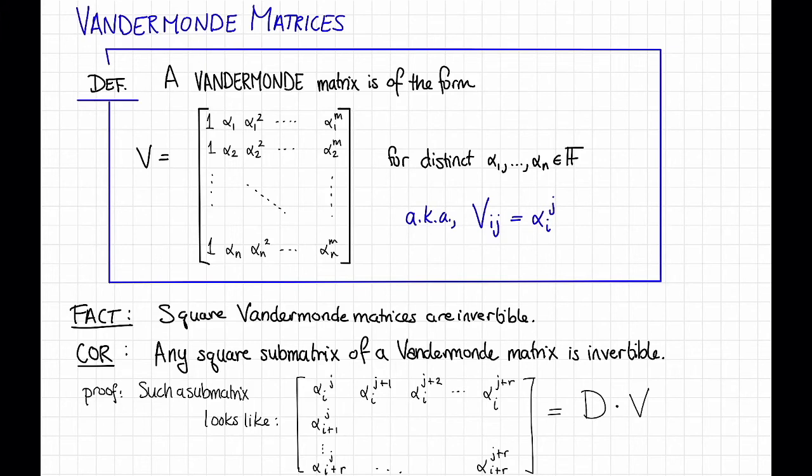But this matrix equals D times V, where D is a diagonal matrix with diagonal entries alpha_i^j, alpha_{i+1}^j, up through alpha_{i+r}^j, and V is a Vandermonde matrix. So by the fact, V is invertible, and D is a diagonal matrix with non-zeros on the diagonal, so it's also invertible, so their product is invertible. So that proves the corollary.